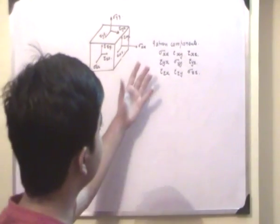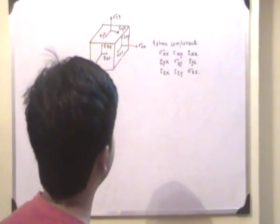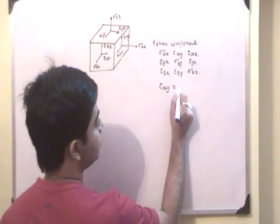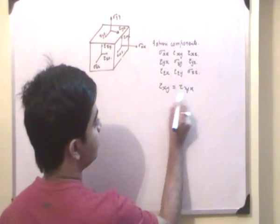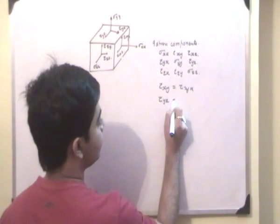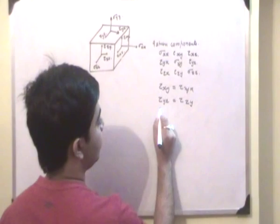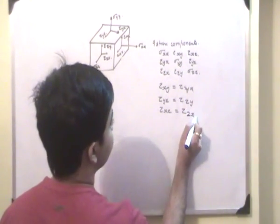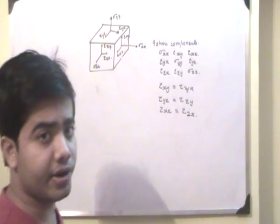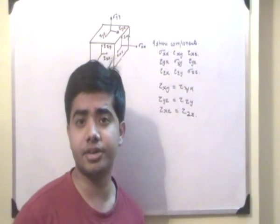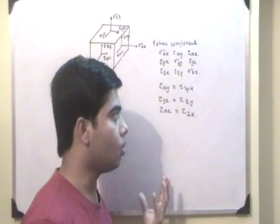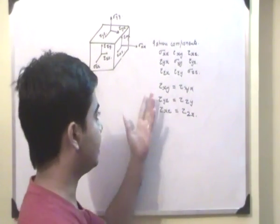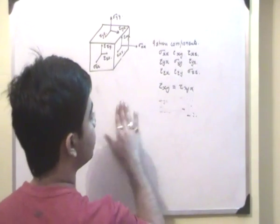Now essentially, how can we reduce these 9 stress components into 6 stress components? Basically, tau xy is equal to tau yx, tau yz is equal to tau zy, and tau xz is equal to tau zx. Why are they equal? Very relevant question. And this will deal with complementary shear stress after we know what is plane state of stress. I will try to prove one of these and essentially the rest two will be left to you.